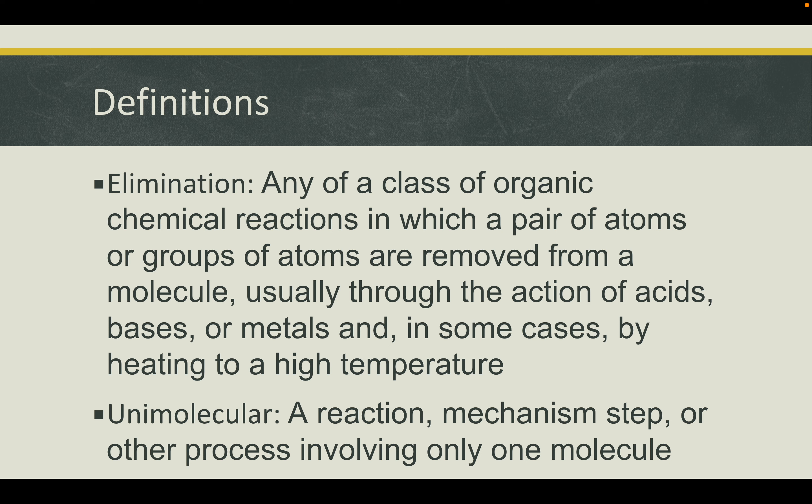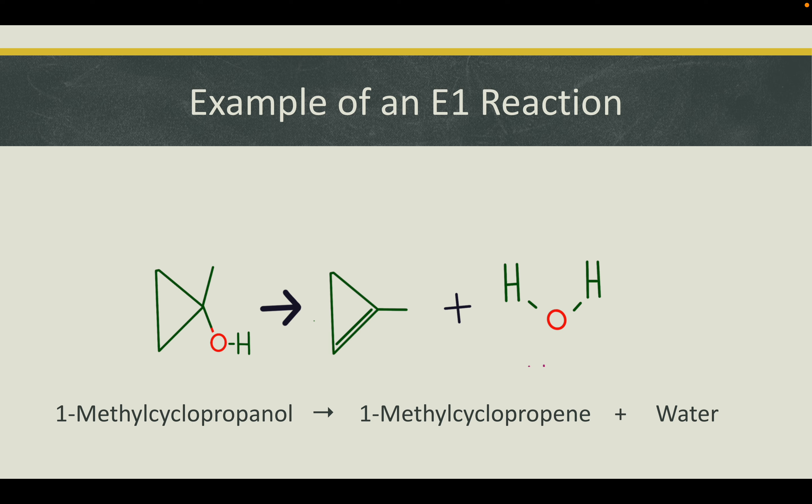Here is an example of an E1 reaction that we are going to be examining for the continuation of this presentation. On our reactant side, we have 1-methylcyclopropanol, which turns into our products of 1-methylcyclopropene — which is commonly used in agriculture — and water.